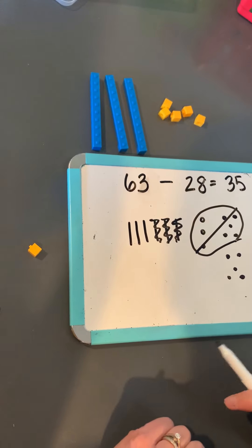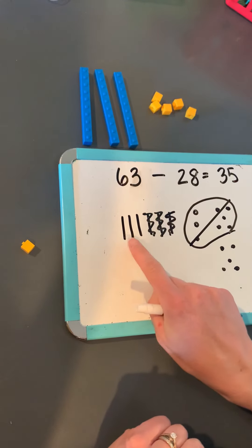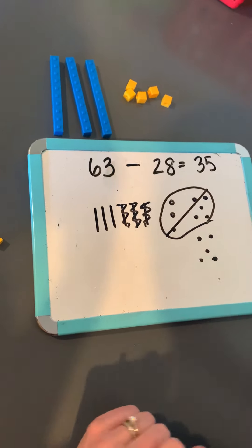And then I can count out my answer. 10, 20, 30, 35. Same answer.